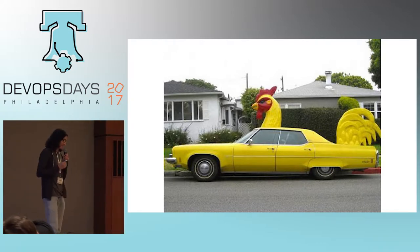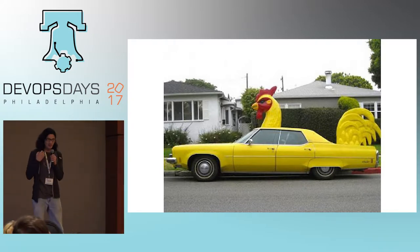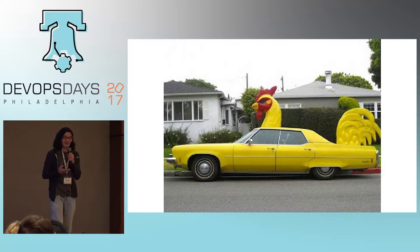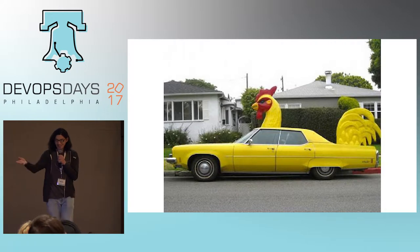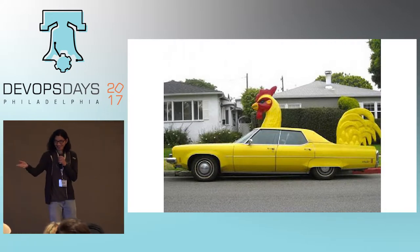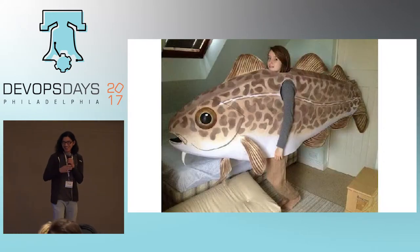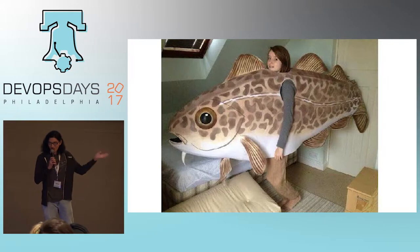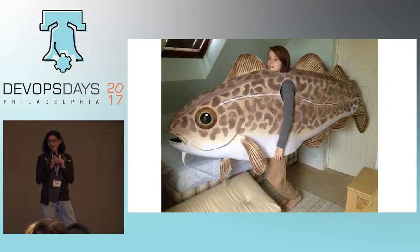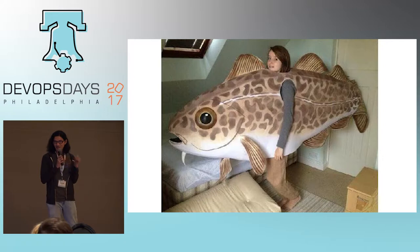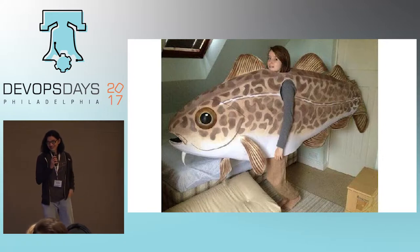Now, some of you might think, if you dress it up, if you put lipstick on the pig, it's actually going to look like a container. But that's not a container. That's a chicken car. And to go further, sometimes we like to pretend that our infrastructure is actually a fish when it's actually a fish out of water. But sometimes, that's actually a pretty good Halloween costume.